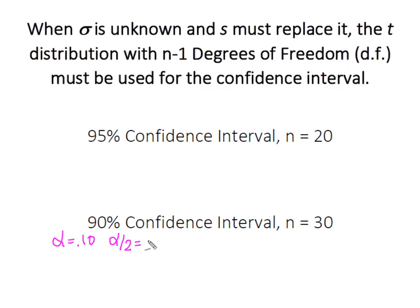That gives 0.05. Based on n minus one degrees of freedom, I have 29 degrees of freedom. So I'll look for t of 0.05 with 29 degrees of freedom in the t-distribution table.